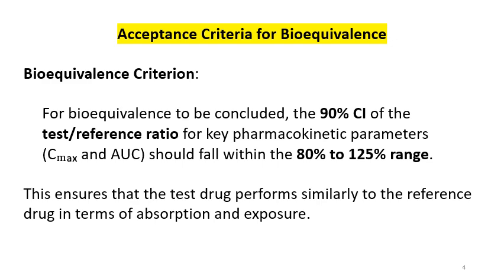Bioequivalence is pass or fail, determined based on the CI value. For bioequivalence to be concluded, the 90% CI of the test and reference ratio for key pharmacokinetic parameters — Cmax and AUC — should fall within the 80% to 125% range. You can watch the related video on this channel to understand where this 80–125% range comes from and how it is calculated.